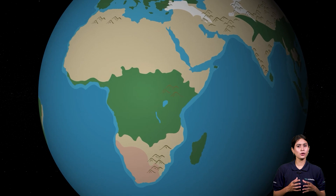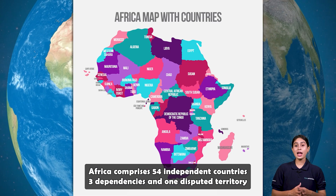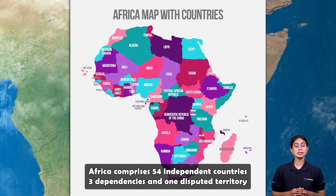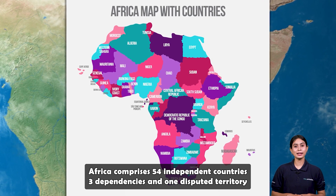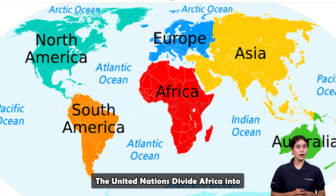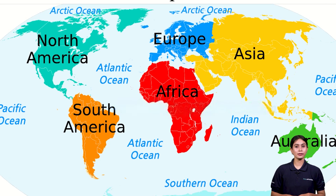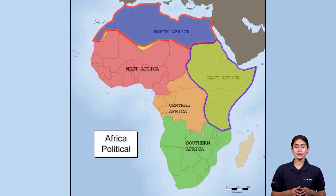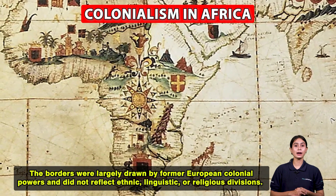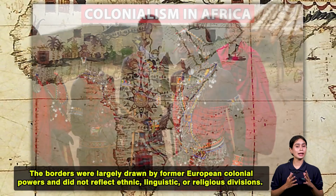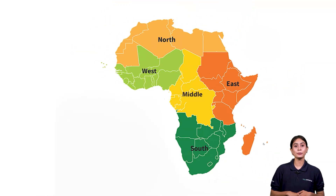Do you know how many countries the continent of Africa has? Africa comprises 54 independent countries, three dependencies and one disputed territory. The United Nations divides Africa into five sub-regions: Northern, Eastern, Western, Middle and Southern Africa. The borders were largely drawn by former European colonial powers and do not reflect ethnic, linguistic or religious divisions. So let us know about these countries which are divided into five sub-regions.